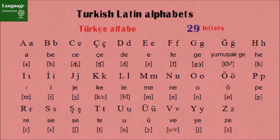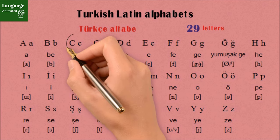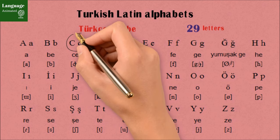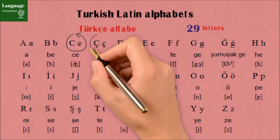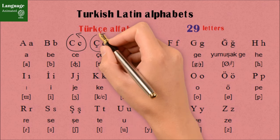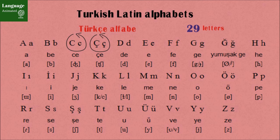For example, the letter C in Turkish is pronounced as J. Another letter, C with a tick mark, in Turkish it's pronounced as CH.